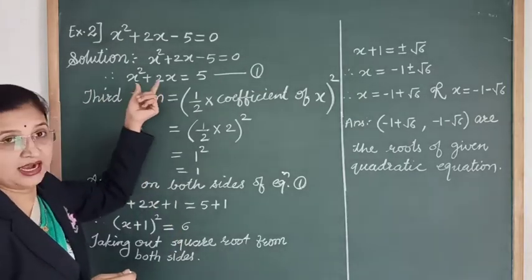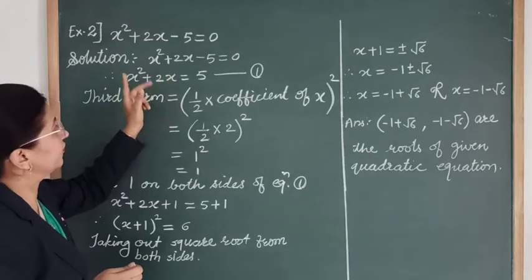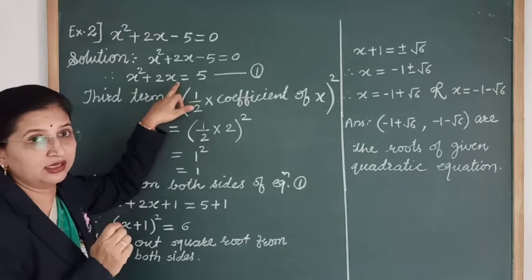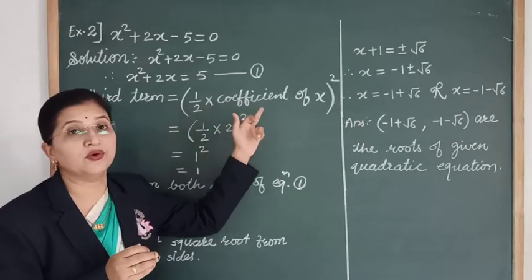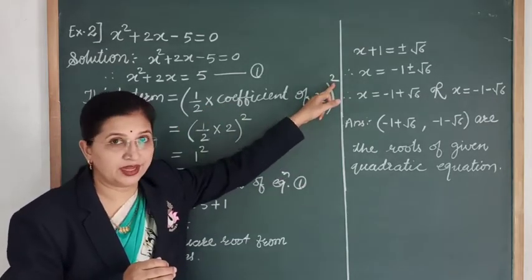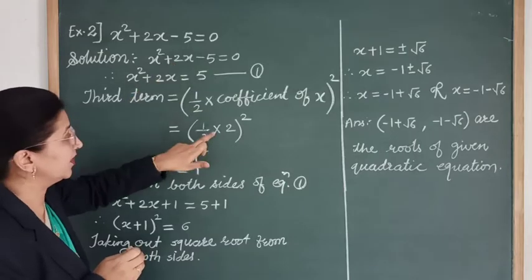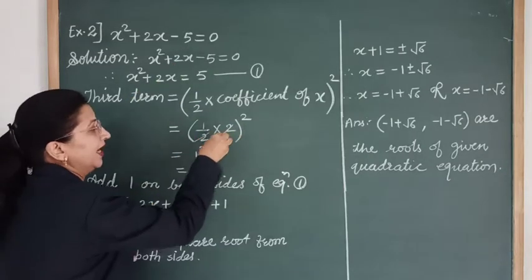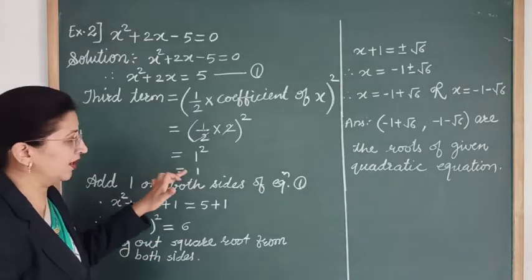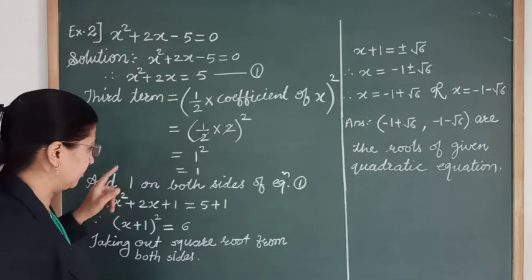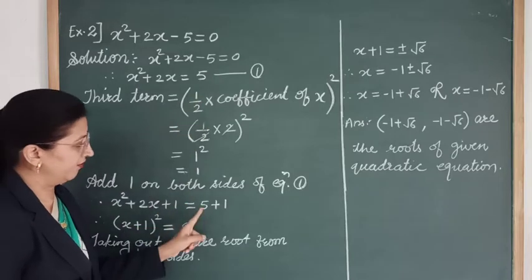Now we need to make the LHS a perfect square. For that we have to add the third term. Let's find the third term using the formula: third term = (½ × coefficient of x)². Here the coefficient of x is 2. So the third term = (½ × 2)² = (1)² = 1. We add this third term to both sides of equation 1. So we get x² + 2x + 1 = 5 + 1.